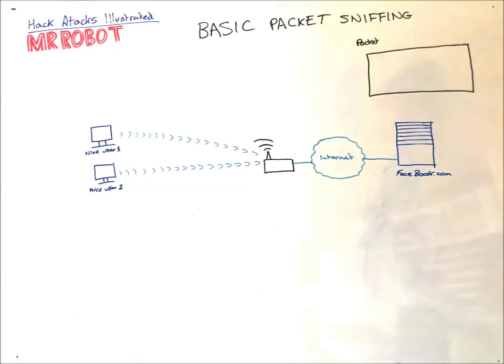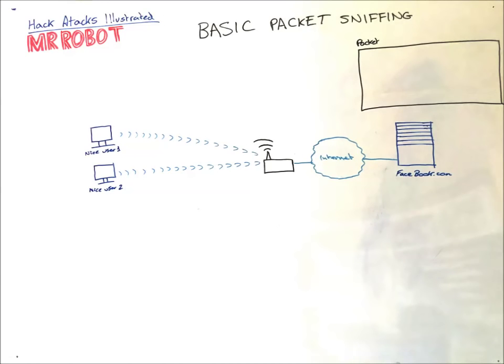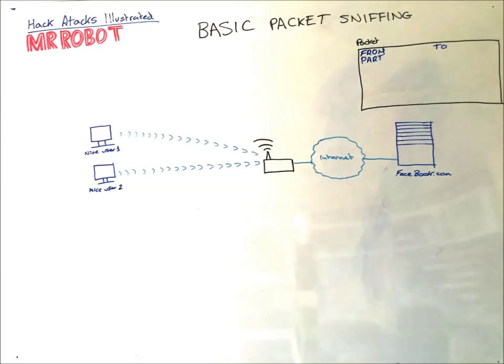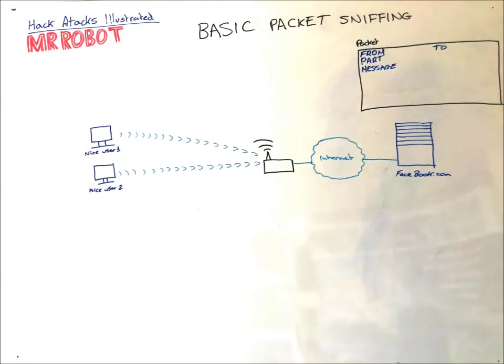Before we go on, I need to explain a packet. All data that travels over any network does so in frames or packets. A packet is exactly what it sounds like. It's like a package or a letter. It has a from address, where the package is coming from. It has a to address for where to deliver the packet. And sometimes a packet will be chopped up into pieces, so we have a part field that tells us which piece is which. And then we have the message proper.